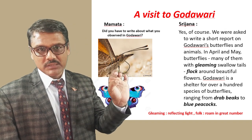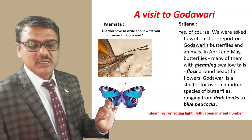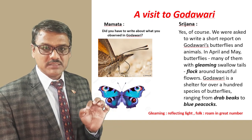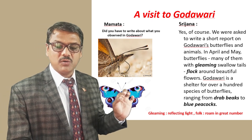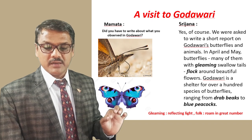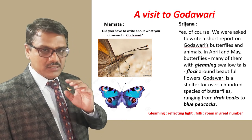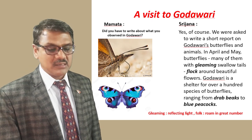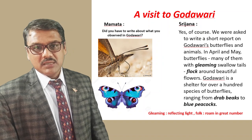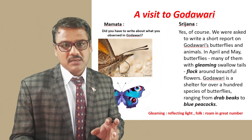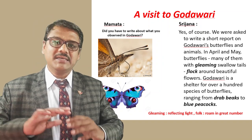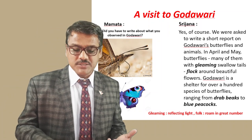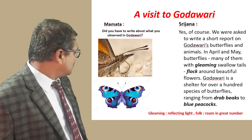The special topic to write about was butterflies and animals. In April, many butterflies — many of them with gleaming swallowtails — flock around the beautiful flowers. Godavari is a shelter for over a hundred species of butterflies, ranging from draftpicks to blue peacocks. She says there are varieties of different species of butterflies found in this place. The pictures included show the upper one as draftpicks and the lower one as blue peacocks — these are just examples.